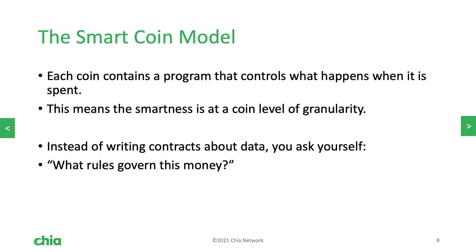Because each coin contains a program that controls what happens when it's spent, the granularity of systems is at the coin level where each person controls their own coins. Instead of writing smart contracts about data, you instead ask yourself: for my application, what rules should govern the money? This is a very fundamental way of thinking about things that is different in Chia. What rules govern this money? When you set out to design something in Chia, you will be constantly asking yourself that question.